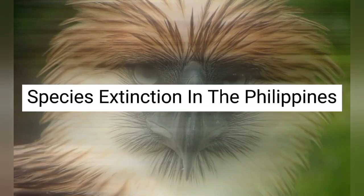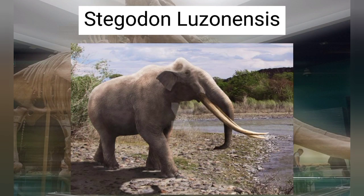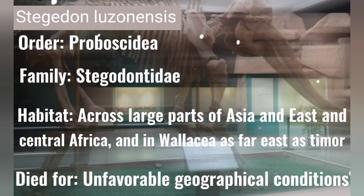Species Extension in the Philippines. Stegodon leuconensis — order: Proboscidia, family: Stegodontidae. Habitat: across large parts of Asia, Central Africa, and Malaysia as far as Timor. Died due to unfavorable geographical conditions.